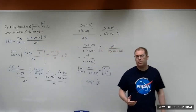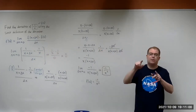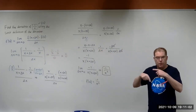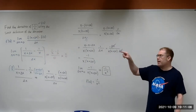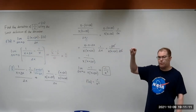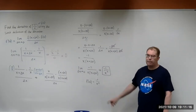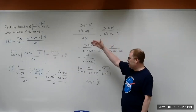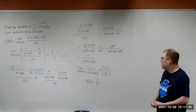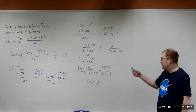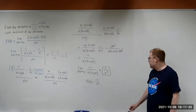Later you will learn there's another process to do this. You can rewrite one over x as x to the minus one and then use the power rule — bring down the negative one, giving minus x, then subtract one from the exponent. And so you end up getting the same result. So this is taking the derivative using the limit definition, and that's a pretty good application of this. I'm going to go ahead and stop here.